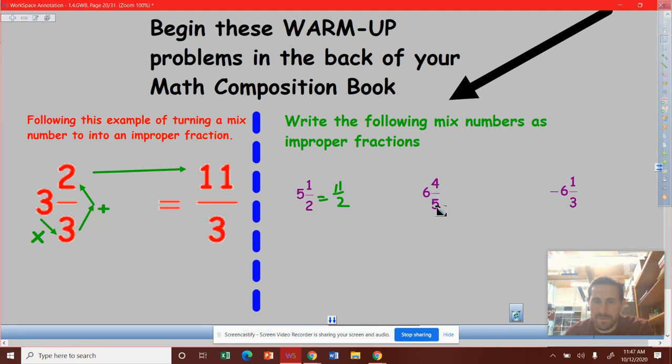Here, 6 and 4 fifths. 5 times 6 is 30. 30 plus 4 is 34 over 5.